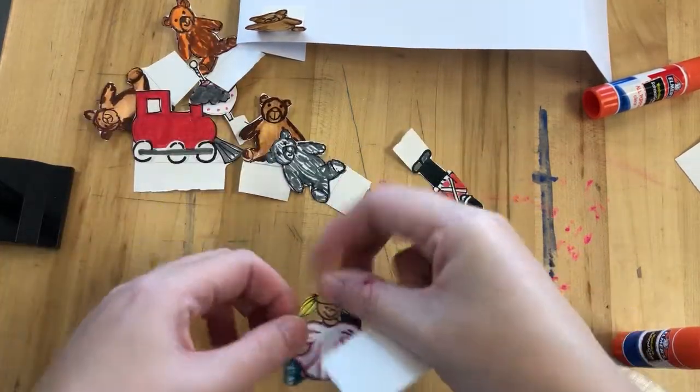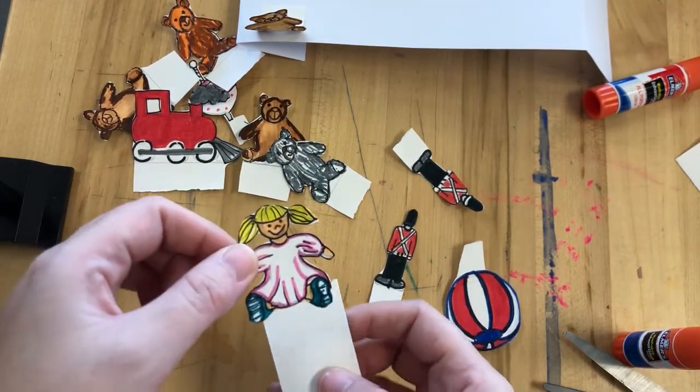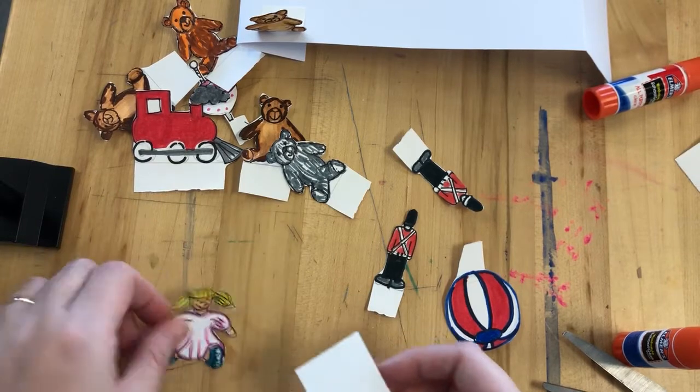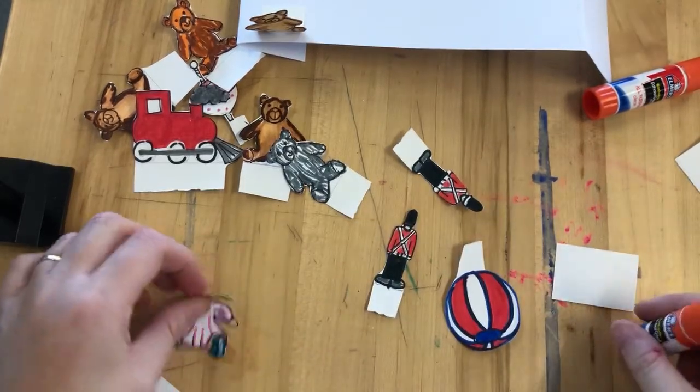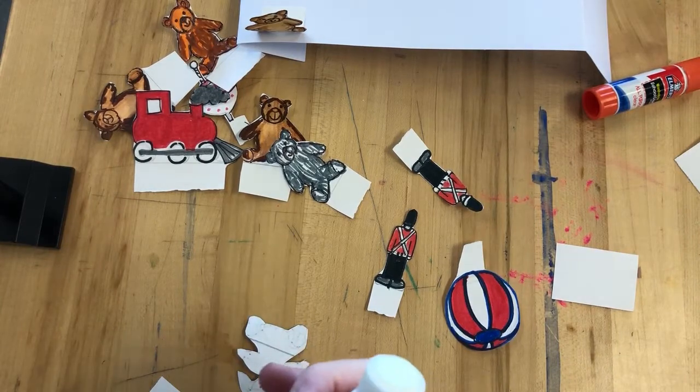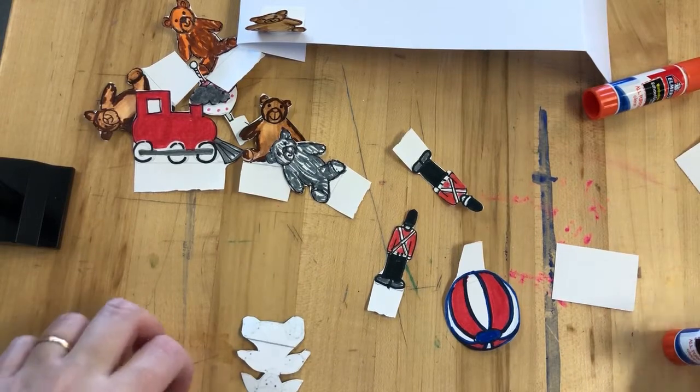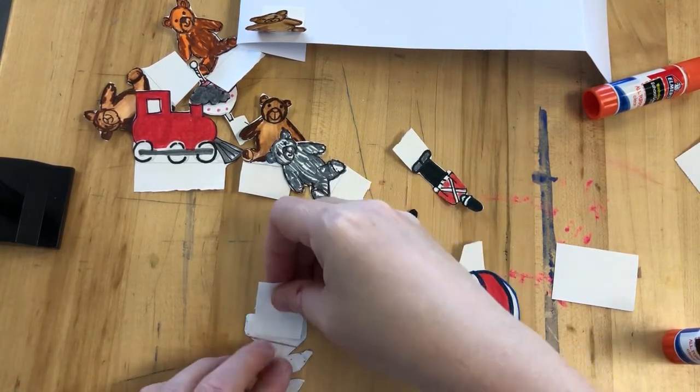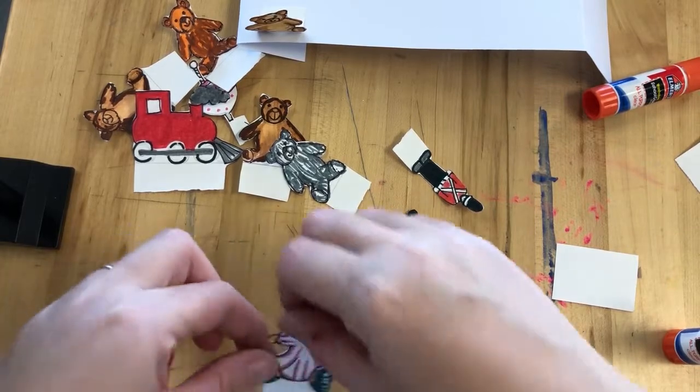Also if you're like me you might have accidentally chopped off one of your glue tabs. If that does happen to you all you need to do is stick a little bit of paper just behind the toy and it will make a new glue tab. It's not the end of the world if you accidentally chop a glue tab off, it just means you've got to do one extra job before you can stick your toys down.